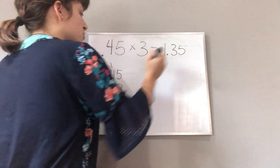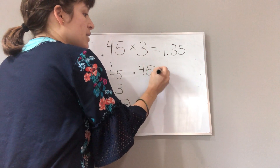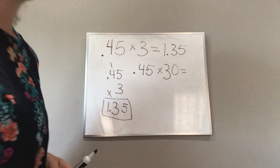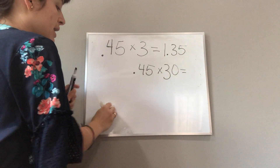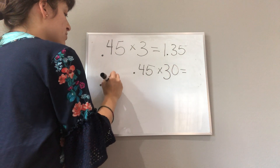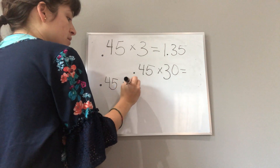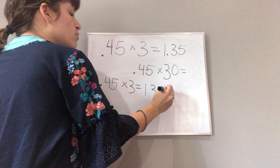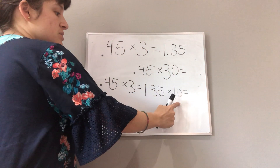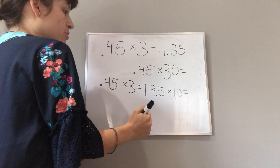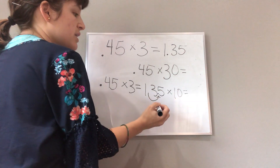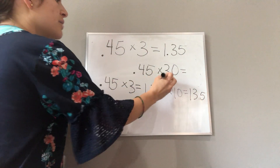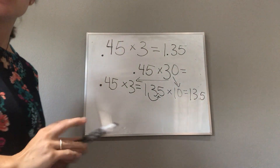Now what if I multiply .45 times 30? This becomes a two-step problem. First I'm going to multiply .45 times 3, and then I will multiply by 10, because 10 times 3 is 30 — I can split that into two separate problems. I move my decimal place one place value and get 13.5. So I'm splitting the 30 into 3 and 10.